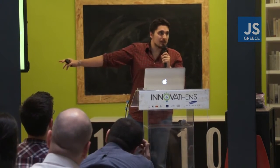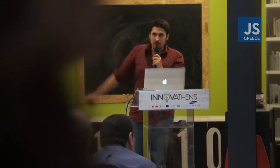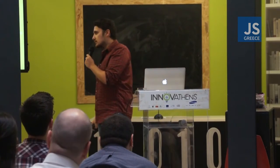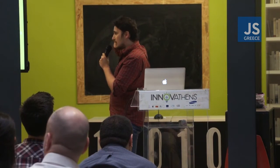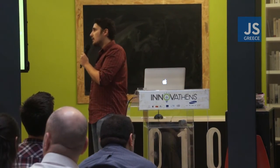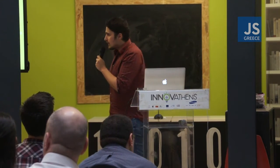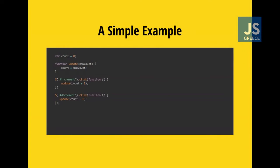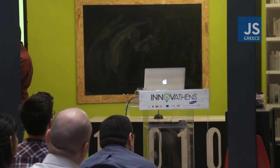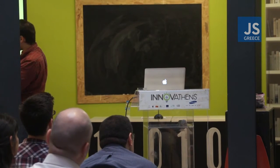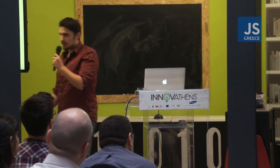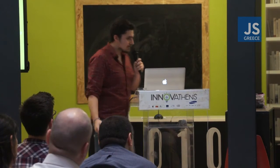By the way, I'm going to upload the slides and share them on the Meetup site, so if you can't read the code right now I do apologize, but you're going to have access to it. Essentially, this tiny bit of code is supposed to represent JavaScript before modules. All of this is in the global scope. You have a count variable, you have an update function, and two click handlers to increment and decrement a number. It's just a simple counter.